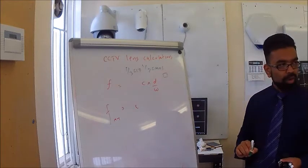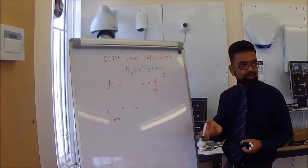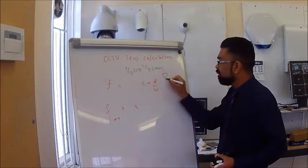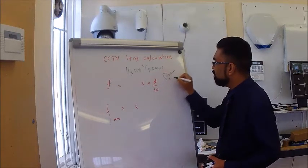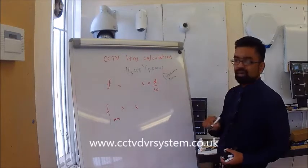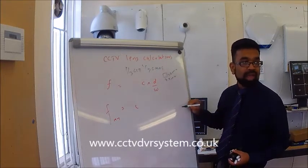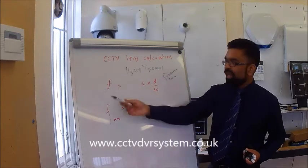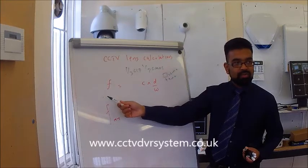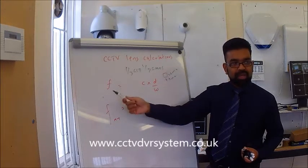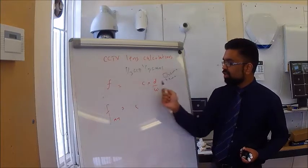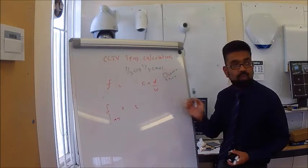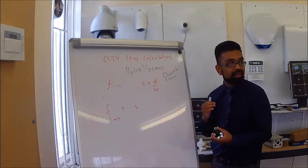That is 4.8 by 3.6 millimeter. So 3.6 is your height, 4.8 is your width. The formula starts as F is what we are trying to find, which is your millimeter, the lens size. C is your sensor, you could use the width or the height, it depends on what you are trying to get as a scene.